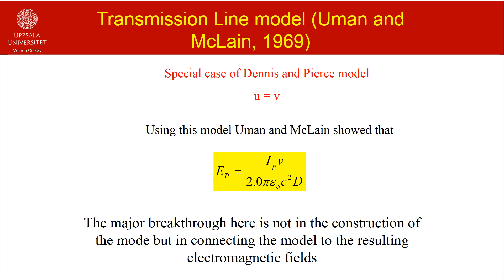In 1969, Eumann and McLean introduced the transmission line model of the return stroke. This is a special case of the Dennis and Pierce model where the current speed is equal to the front speed. Eumann and McLean referred to it as the transmission line model because if you inject a current into one end of a uniform and lossless transmission line, it will propagate along the line without any distortion, provided the amplitude of the current is not large enough to cause corona emissions along the line.